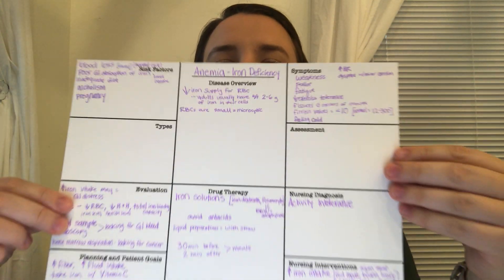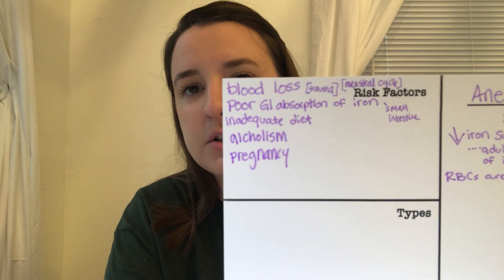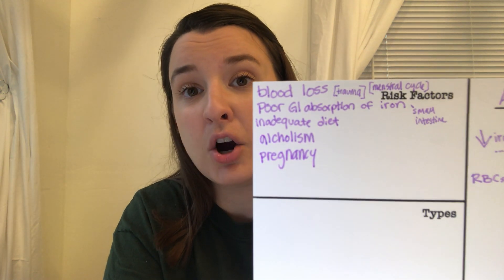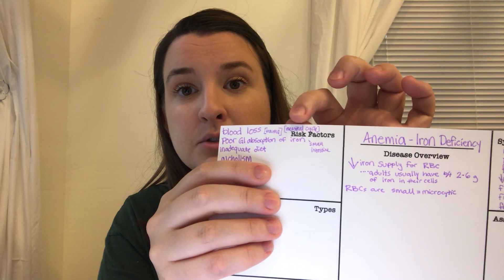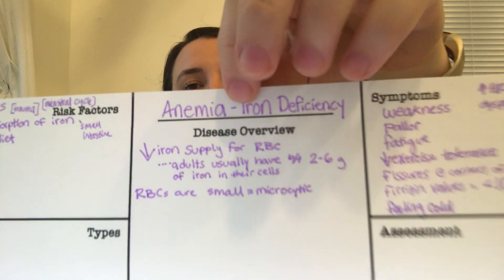Iron deficiency anemia can happen with blood loss from trauma or even a menstrual cycle, poor GI absorption (like after removal of a large portion of the small intestine), an inadequate diet, alcoholism, or pregnancy. This results in a decreased iron supply needed for red blood cells — adults usually have between two to six grams of iron in their cells, and falling below that can trigger iron deficiency anemia.